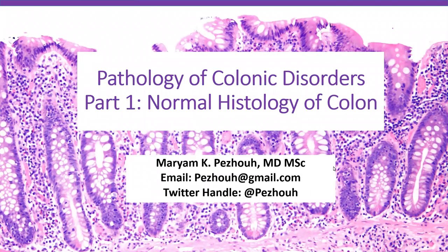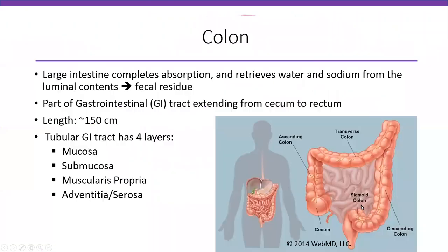Today we're going to talk about pathology of colonic disorders. In the first part, we're going to go over normal histology of the colon. The colon, or large intestine, basically completes absorption and retrieves water and sodium from food and makes the fecal residue. It's part of the gastrointestinal tract extending from the cecum, going to the ascending colon, transverse colon, descending colon, sigmoid, and rectum — around 150 centimeters, though the length varies between individuals.